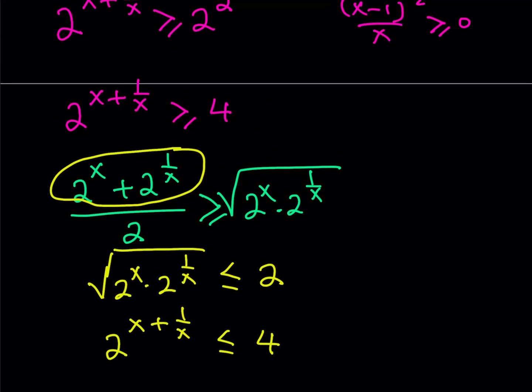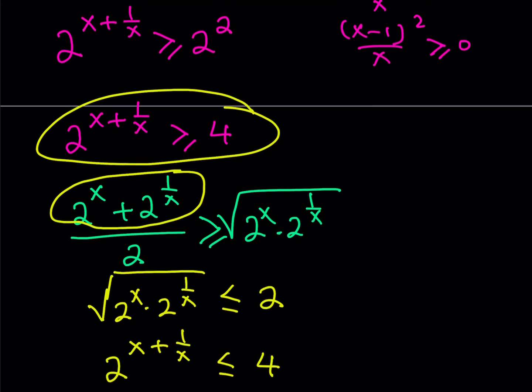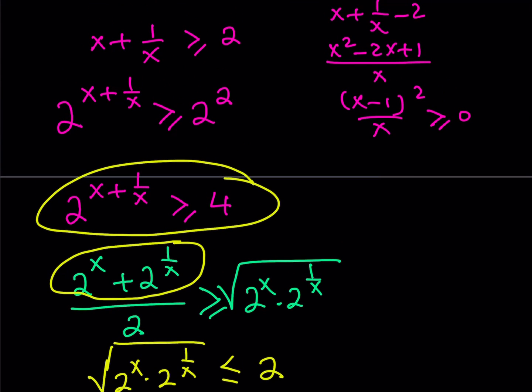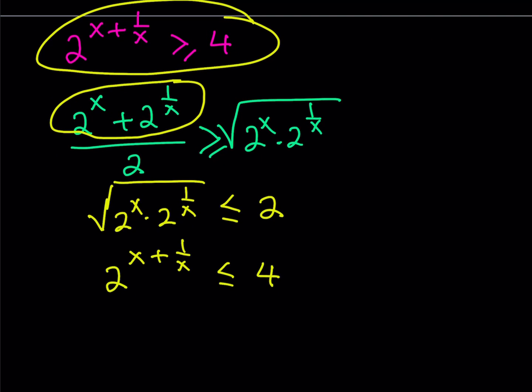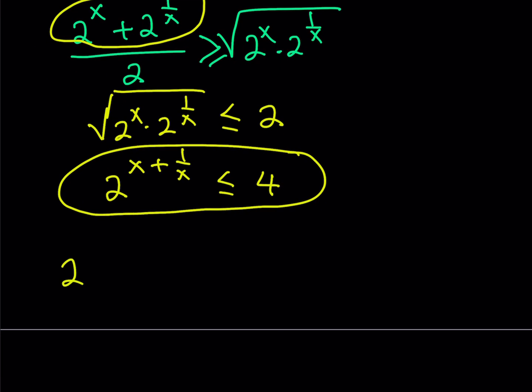But notice that in this expression, we basically got that that expression is supposed to be greater than or equal to 4 if you start with the assumption that x plus 1 over x is greater or equal to 2, which is true for positive x's. Now, what is that supposed to mean? Well, we kind of have like two contradicting statements, but this means that 2 to the power of x plus 1 over x is supposed to equal 4. Okay. Now, what is that supposed to mean? Let's talk about that. Well, it just means that x plus 1 over x is equal to 2.